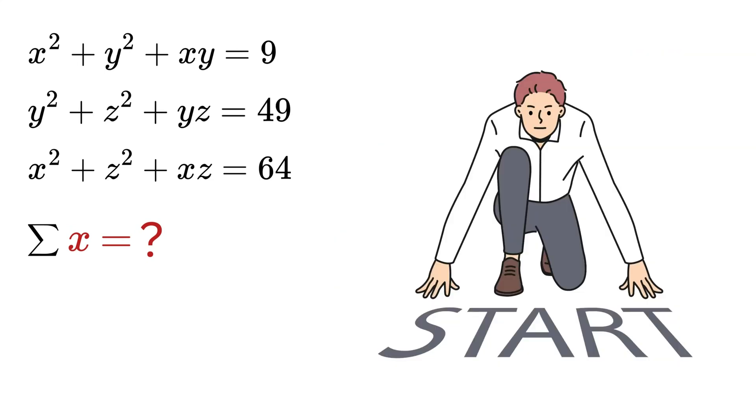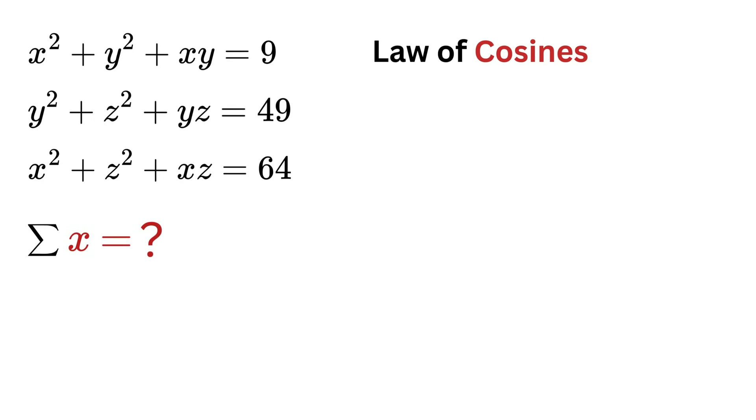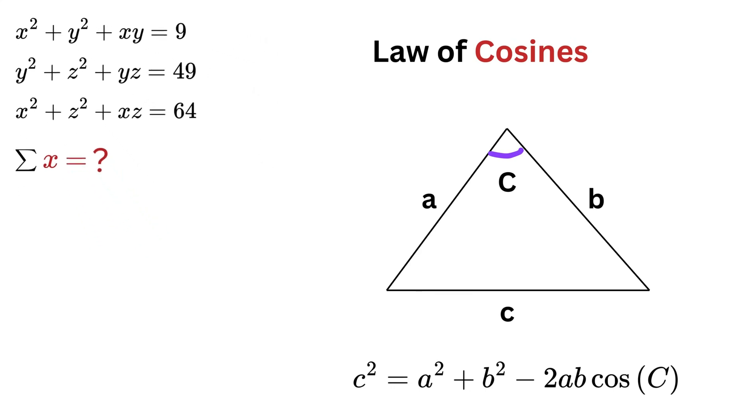Okay, let us start. In order to solve this, let me tell you about the Law of Cosines in a triangle, which relates the lengths of the sides to the angle between them. If we have a triangle with sides a, b, and c, and the angle opposite side c is called C, then the law says c² = a² + b² - 2ab cos C.